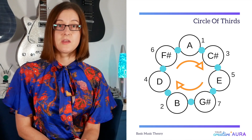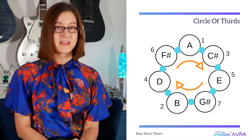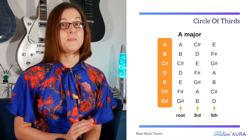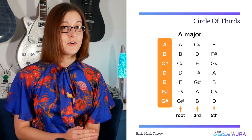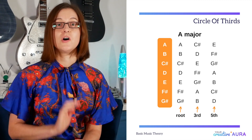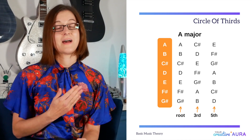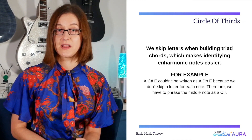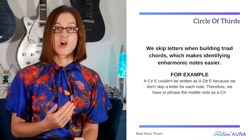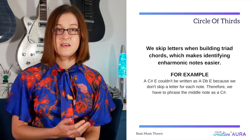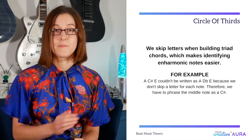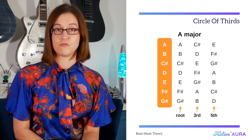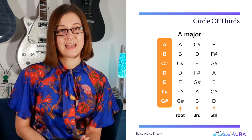We build the chords by using three notes in a sequence clockwise from each other. For an A chord you'd use A, C sharp and E. For the B chord you'd use B, D and F sharp. For the C sharp chord you'd use C sharp, E and G sharp, and so on until in total you get seven chords. We skip a letter each time we build a triad chord — this makes it easier to identify harmonic notes. So A, C sharp and E wouldn't be written as A, D flat and E because we don't skip one letter for each note. The middle note must be phrased as C sharp. The first note in the chord is known as the root, the middle note is known as the third, and the last is known as the fifth.